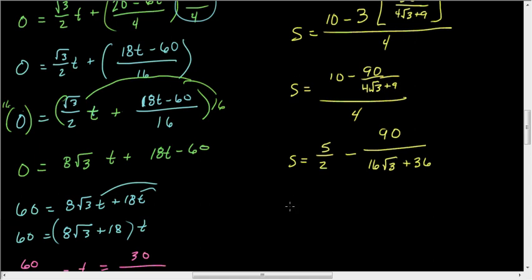We can reduce the second one here. This is going to be 5 halves minus, and we can pull a 2 out from everything, so I get 45 over 8 root 3 plus 18. And there we go.